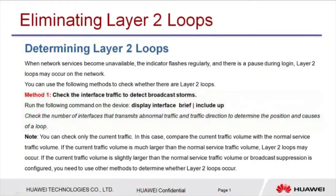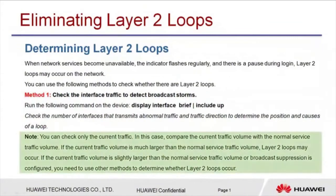This method can be used to check only the current traffic. We need to compare the current traffic volume with the normal service traffic volume. If the current traffic volume is much larger than normal, Layer 2 loops may occur. If the current traffic volume is only slightly larger, or broadcast suppression is configured, you need to use other methods to determine whether Layer 2 loops occur.